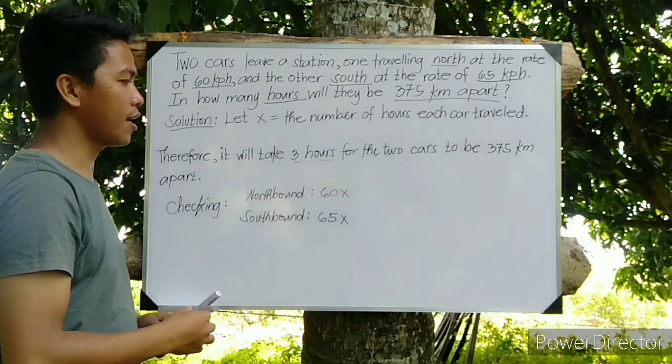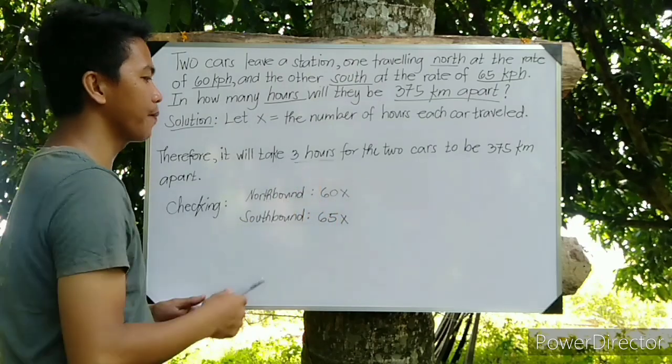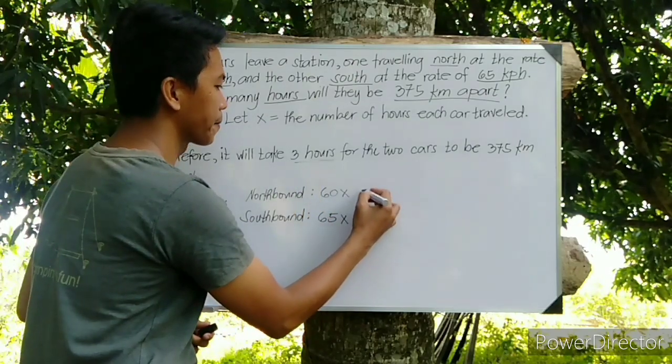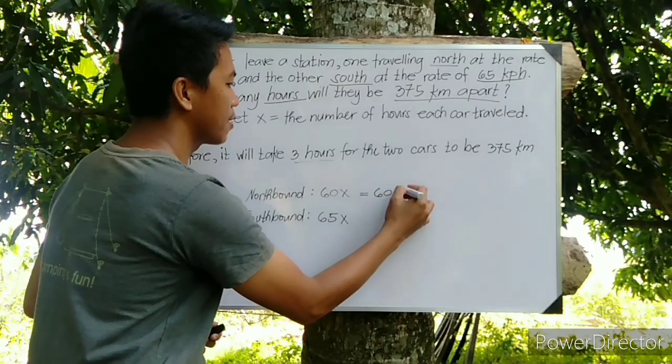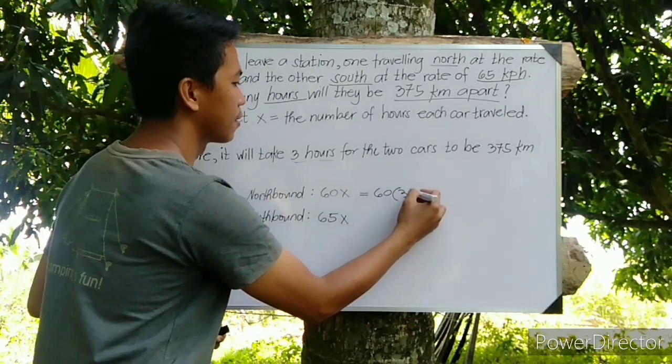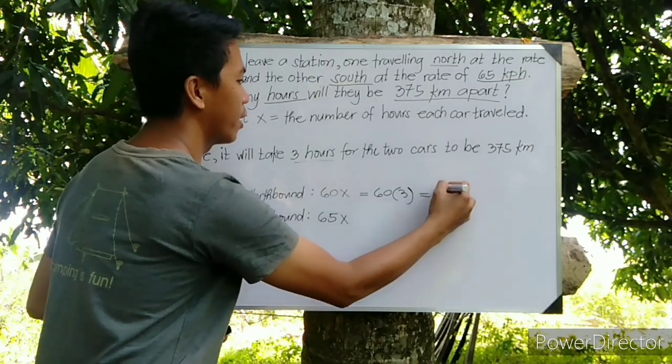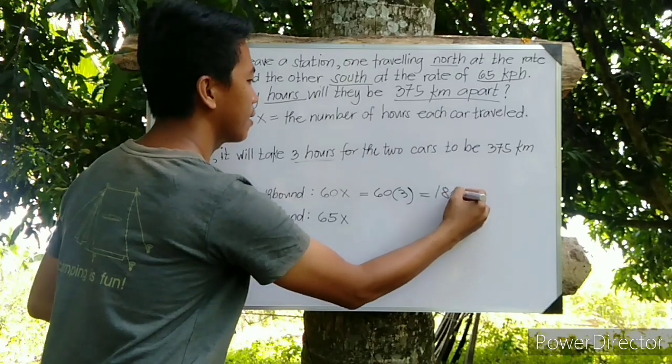Since we already found out the answer for X, that is 3, so we have to multiply 60 times 3, that is 180 kilometers.